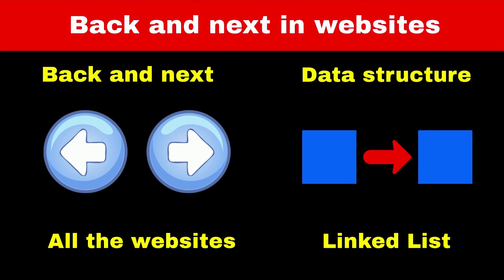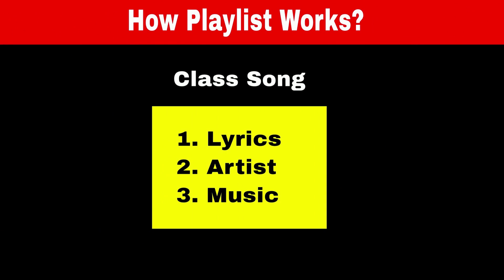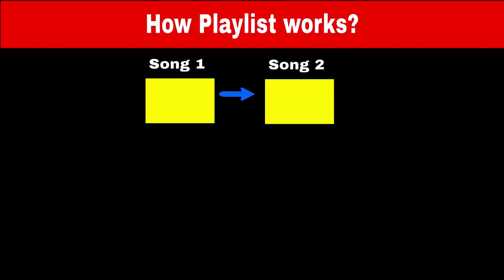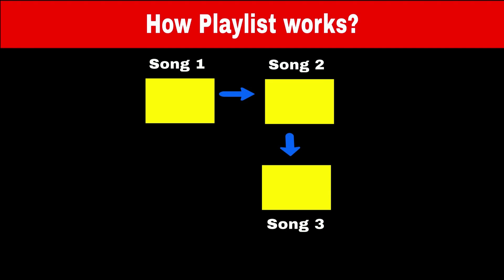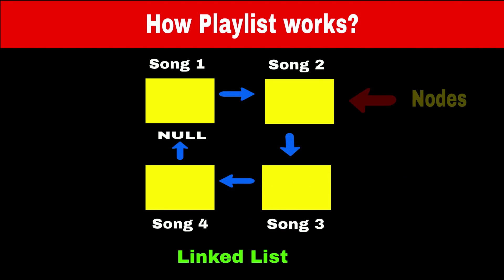Do you know which data structure is used to implement playlists of songs? Consider a song as a class with variables like artist and lyrics. All songs are objects of that song class. When a user adds a song into a playlist, we create another object and the first object points to the second object, so we can go from first to second. This data structure where all objects are linked together is called a linked list, and all connected objects are called nodes. The first node that helps traverse the entire list is called the head node.